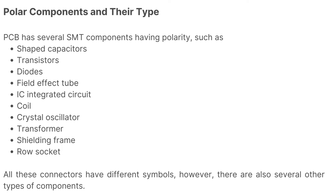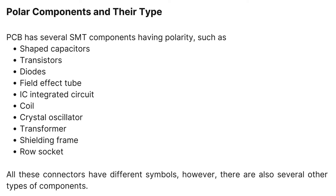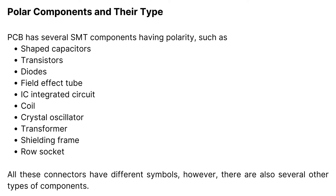PCB has several SMT components having polarity, such as shaped capacitors, transistors, diodes, field effect tubes, IC integrated circuits, coils, crystal oscillators, transformers, shielding frames, and row sockets. All these connectors have different symbols; however, there are also several other types of components.